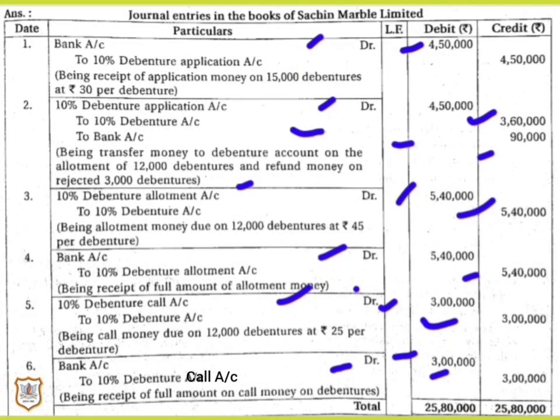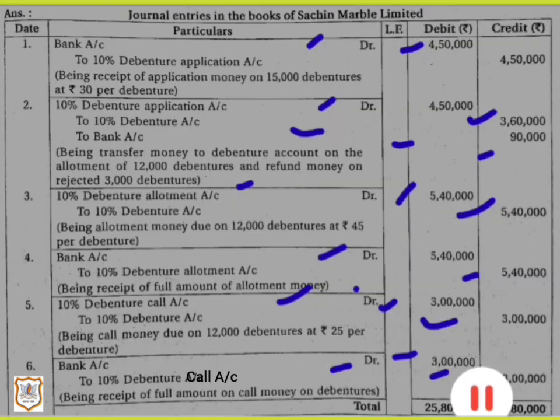In this way, journal entries are passed. As we have noticed, there is not much difference between the accounting treatment for issue of shares and issue of debentures. I hope this session has given you some relief, and in the upcoming session we will solve some more problems. Thank you.